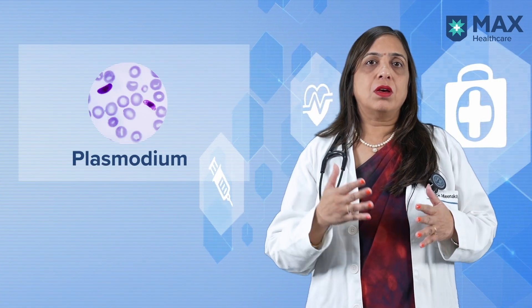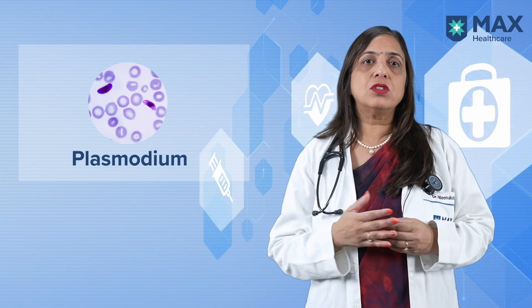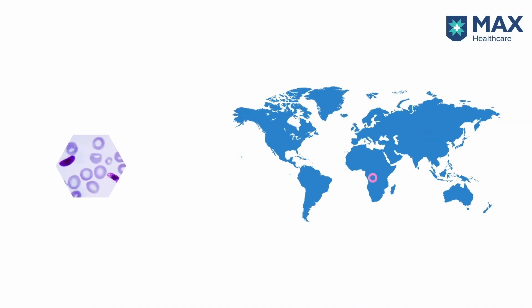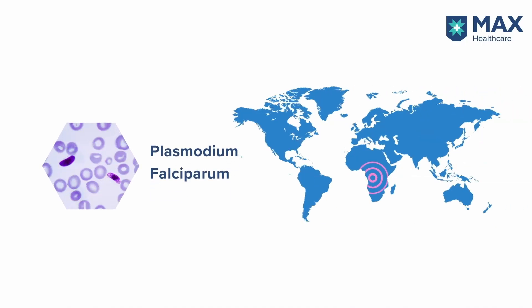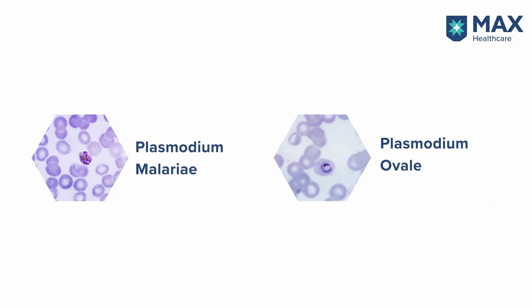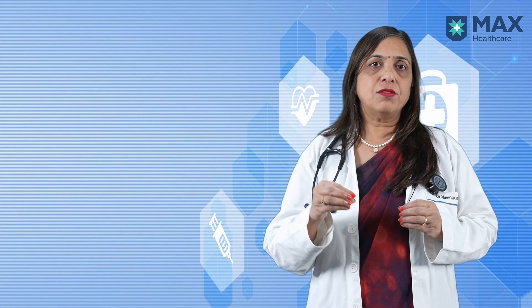This plasmodium which spreads malaria is actually of 4-5 types. This could be plasmodium falciparum, which is a deadly malaria very often seen in Africa and sub-Saharan region. Then there is plasmodium vivax, which is more common in the Indian and South Asian subcontinent. Then there is plasmodium malariae and plasmodium ovale.